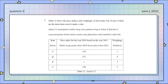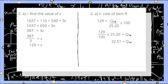Question 2 is based on Table 12. For question 2A1, we are asked to find the value of x, given that the sum is 1037. Substituting into the formula: 1037 equals 110 plus 540 plus 3x. Adding 110 and 540 gives 650, so 650 plus 3x equals 1037. Subtracting 650 from 1037 gives 387, and dividing by 3 gives x equals 129.